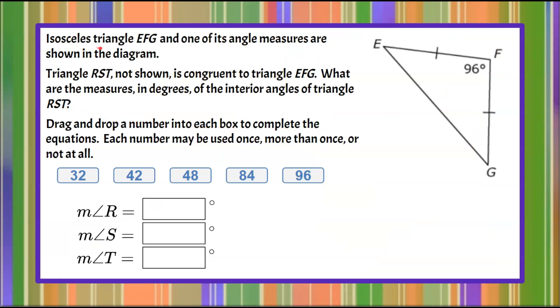Isosceles triangle EFG and one of its angle measures are shown in the diagram. Here's triangle EFG. Triangle RST, not shown, is congruent to triangle EFG. What are the measures in degrees of the interior angles of triangle RST?